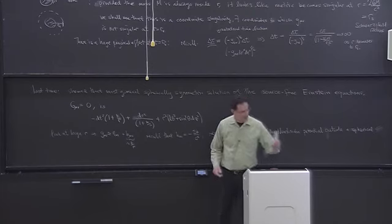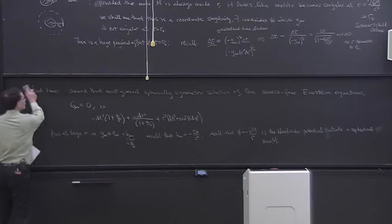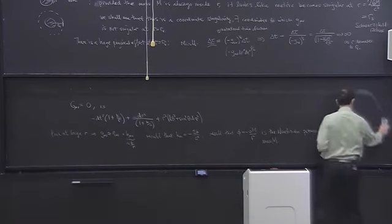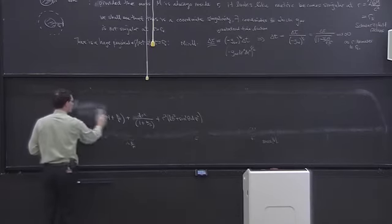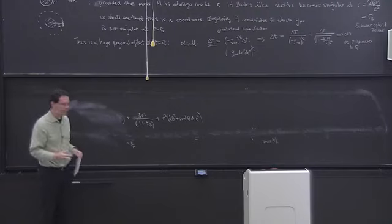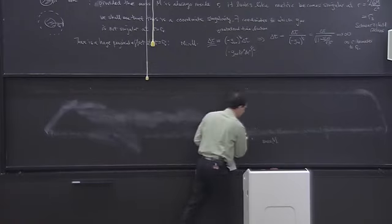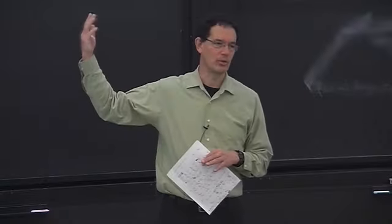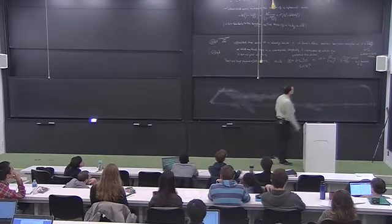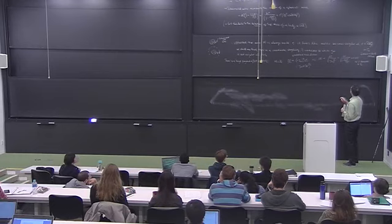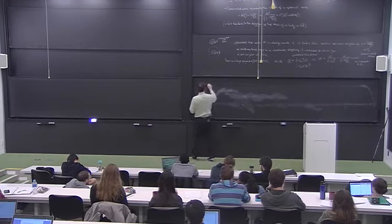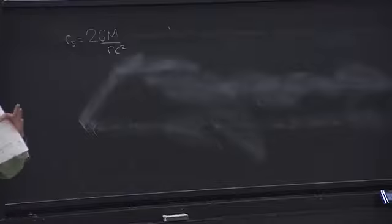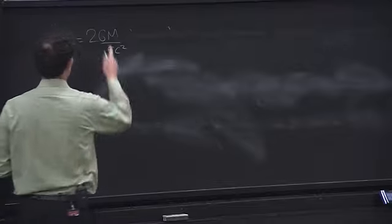Let's put some numbers in. A big reason for keeping c and G in the formulas — many books set G=1, c=1 — is that when you look at a formula you can take limits: what happens if the speed of light goes to infinity, or if Newton's constant is small or large? Those things become immediately obvious. For example, why is the Schwarzschild radius r_S = 2GM/c² small? It's small because c is large — the speed of light is a big number.